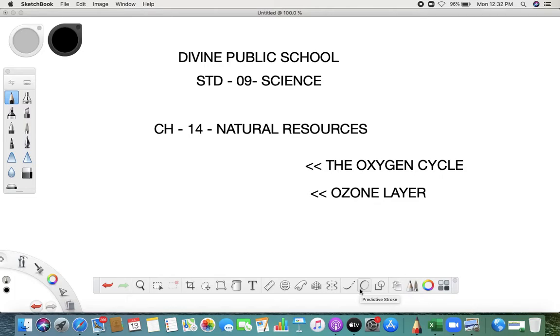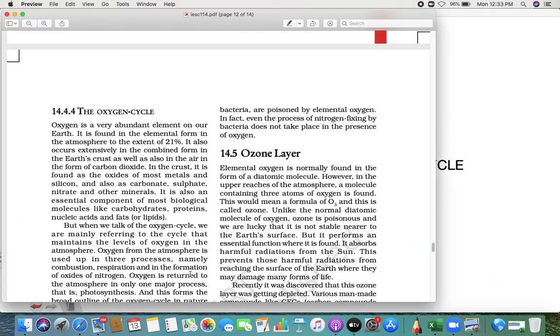I'm your science teacher. We are learning Chapter 14: Natural Resources. This is the last lecture of our chapter. We are going to learn two topics: the oxygen cycle and the ozone layer. Oxygen is a very important gas for us—it gives us life, we can say. But we are talking here about how the oxygen gas will balance in our atmosphere, how it goes to the earth and comes back. That is the process we are going to see now.